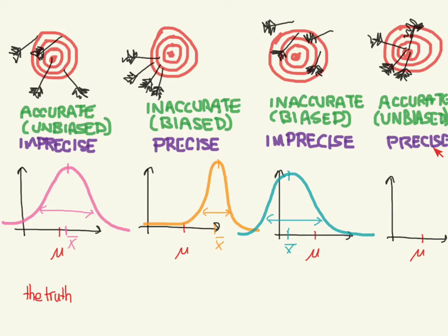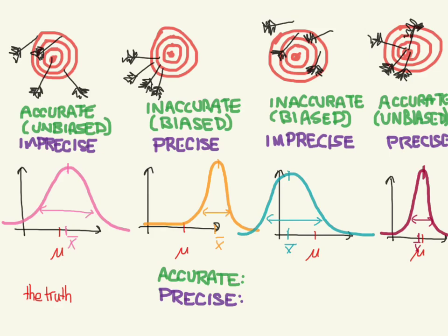The final one is the accurate and precise case. This one is going to have a sample mean which is pretty close to the population mean, and it's going to have a very narrow distribution with a very small standard deviation. So we would say that it is both precise and accurate. For an accurate distribution, the sample mean will be close to the population mean, and for a precise one, the sample's standard deviation is small. That's accuracy and precision — looked at using the traditional method of targets and arrows, as well as these distributions.